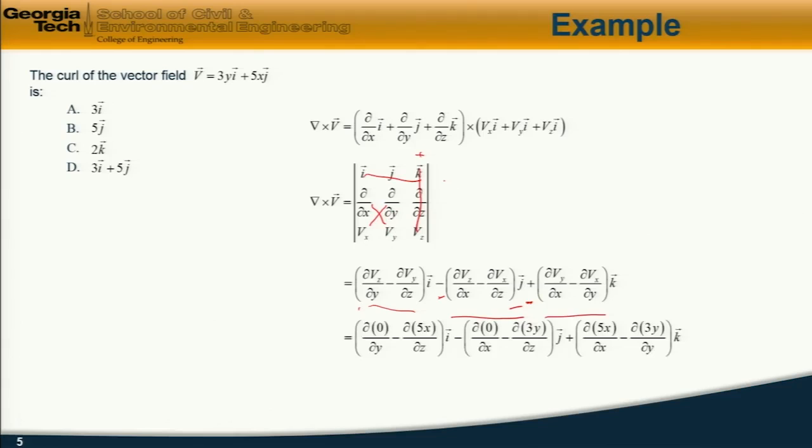So now we're ready to evaluate this. And writing out the terms, we have this. Vz is 0, so dVz by dy is 0. d times 5x by dz is also 0. And similarly, with the remaining terms, and ultimately, when we go through this, all we're left with is the k term. And the answer is 2k. So the answer is c.